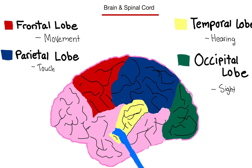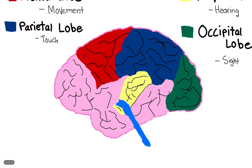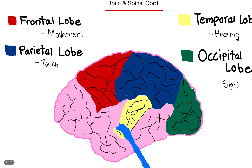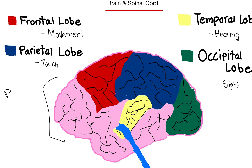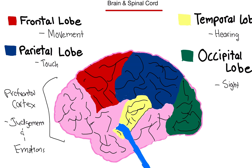In addition to the frontal lobe, there's actually something called the prefrontal cortex. It is kind of basically part of the frontal lobe, but it's not for movement, funny enough. The main frontal lobe is for movement, but the prefrontal cortex — which is this part right here in the front — that's not a lobe. And this area is for judgment, emotions, and thought, for example.